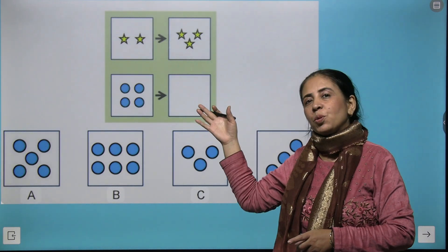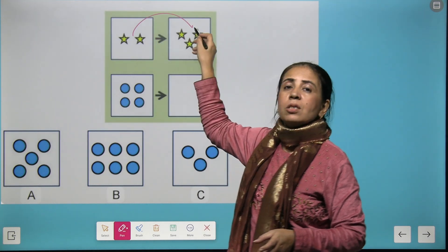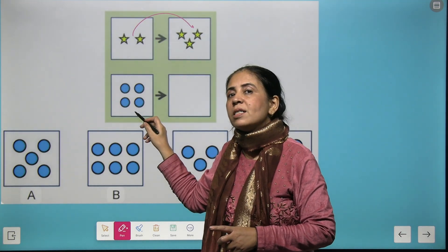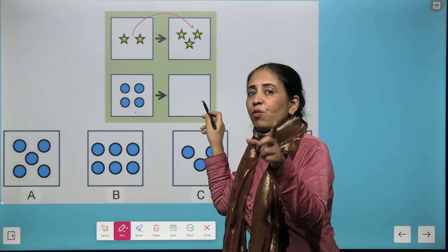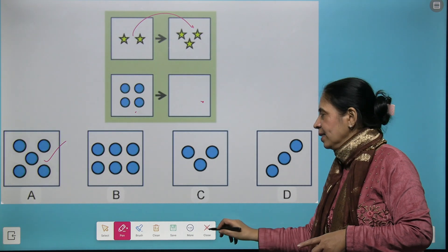Here I have brought few more images as two stars turn to three similarly four circles turn to five. Four plus one is five. So here we got the right answer.